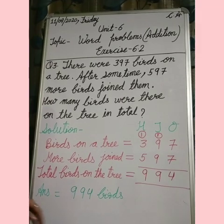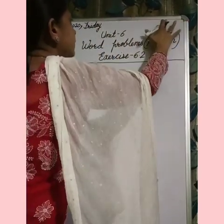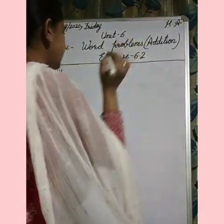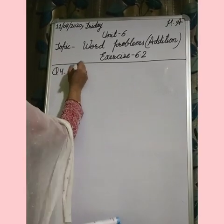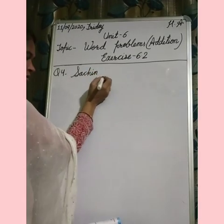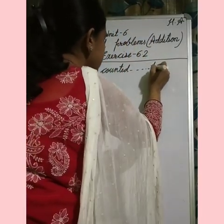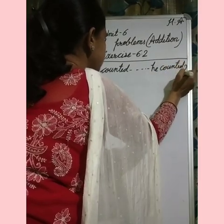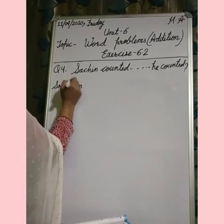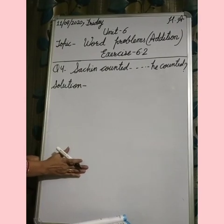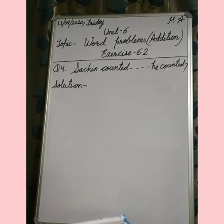Now question number 4 — you have to do this question as homework. Read the question from your book and write it in your copy using the first two words and last two words with dashes, then write the solution. This is your homework.